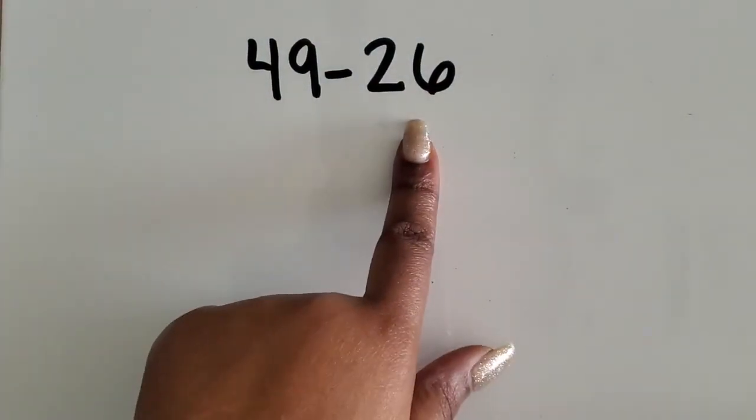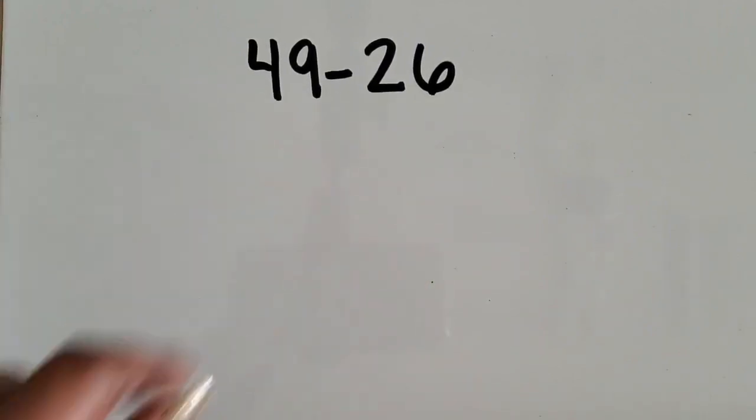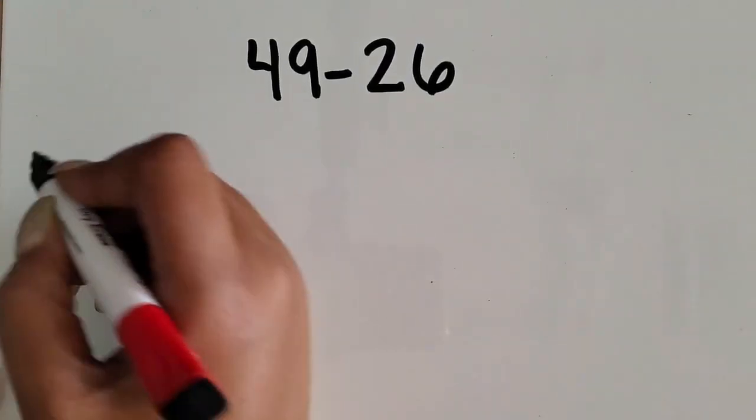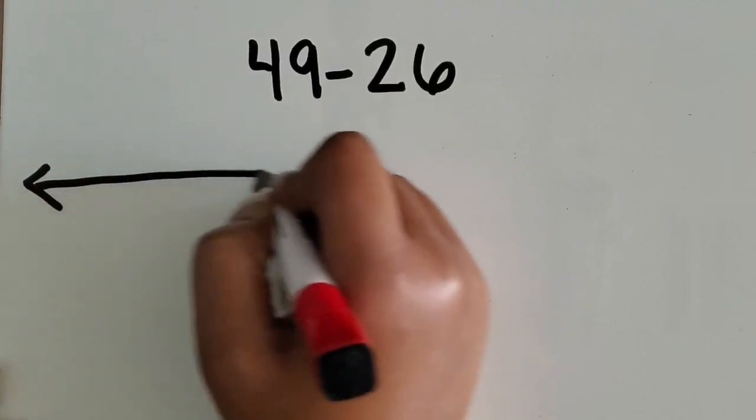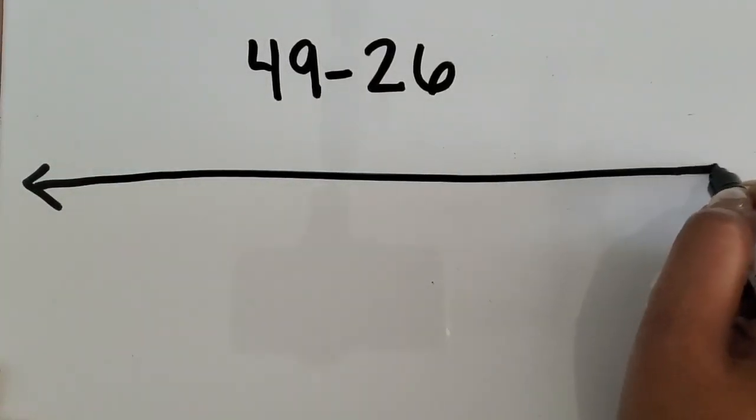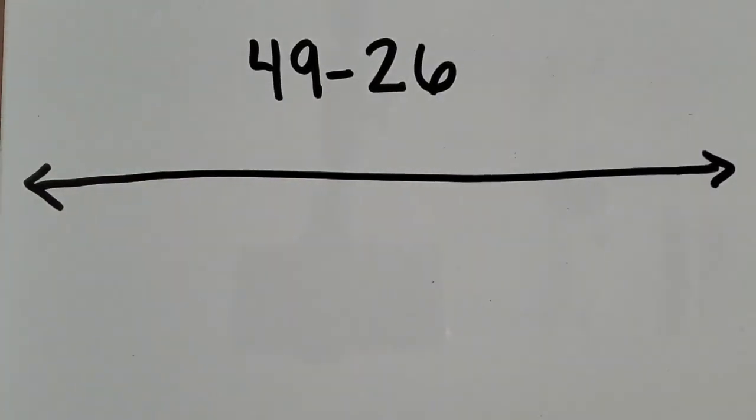We are going to subtract one two-digit number from another two-digit number using an open number line. There are multiple ways to subtract using a number line. You can count up or you can count back.